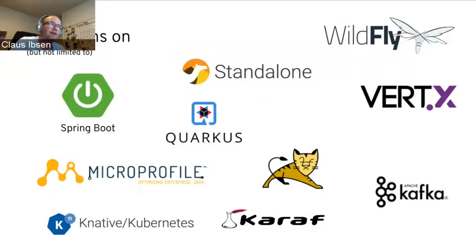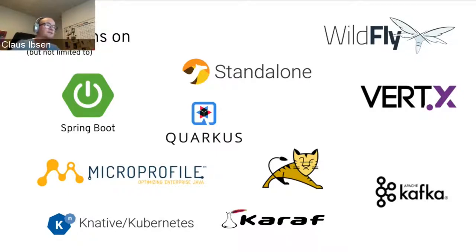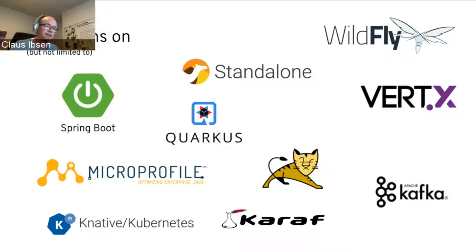Camel runs on all the popular Java-based runtimes, whether it's Spring Boot or Quarkus, which we're going to see in the demos. There's traditional standalone Camel, you can run it in Tomcat, OSGI with Karaf, and also on the cloud with Kubernetes and native. There's Kafka connectors and runtimes like Vert.x and Java EE app servers like WildFly. But at the end of the day, Camel is just a library — essentially just a set of JAR files — so you can embed and use Camel anywhere you want.